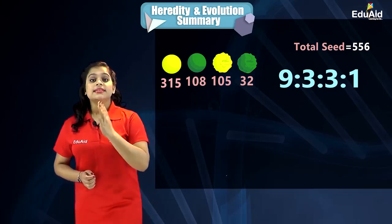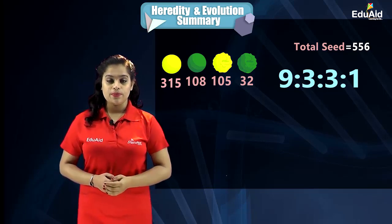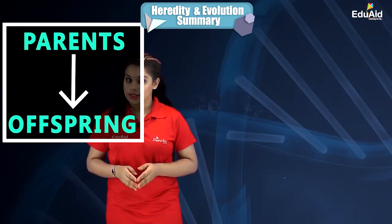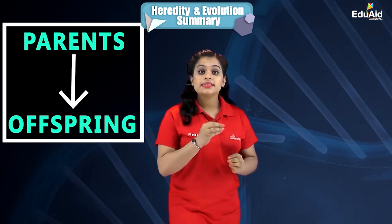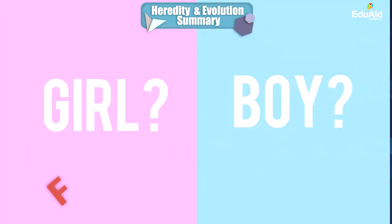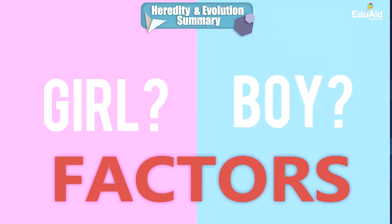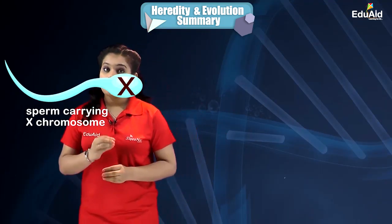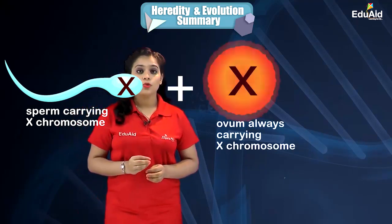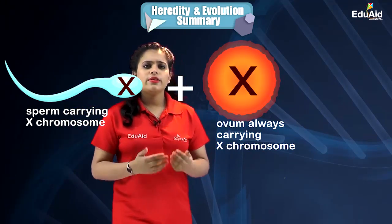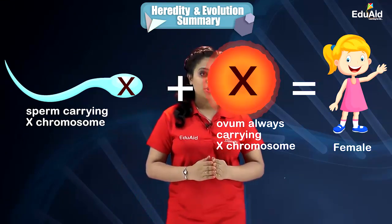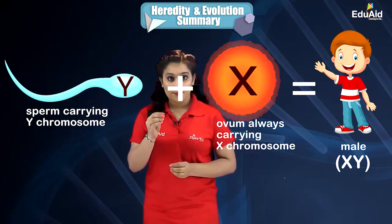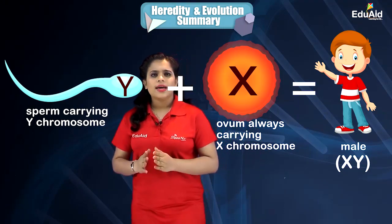This is the dihybrid phenotypic ratio. After that we learned how traits get expressed in progeny. We also learned that sex is determined by various factors in different species. In human beings, the sex of the child depends on whether the paternal chromosome is an X chromosome, resulting in a girl, or a Y chromosome, resulting in a boy.